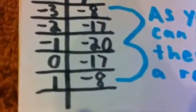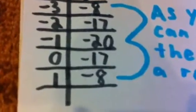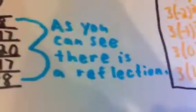For the first point, I got negative 3, negative 8; negative 2, negative 17; negative 1, negative 20; 0, negative 17; and 1, negative 8. And as you can see, there's a reflection.